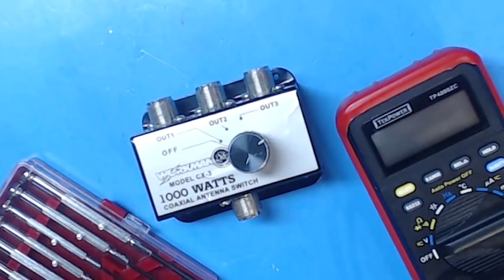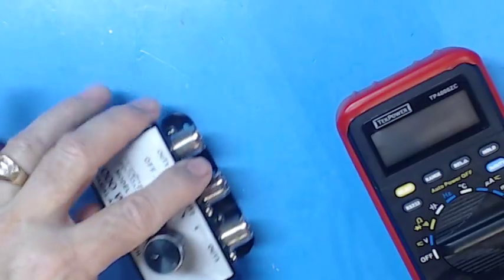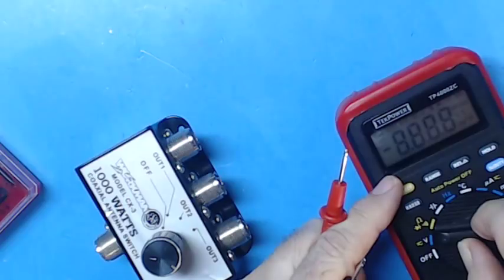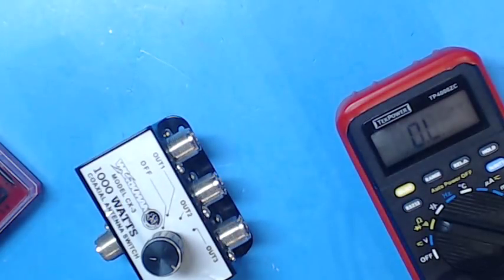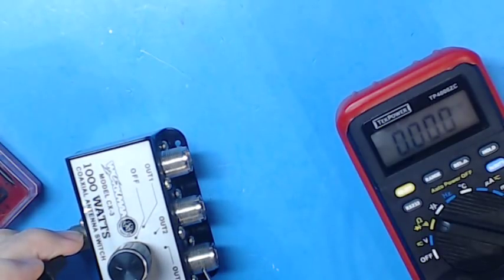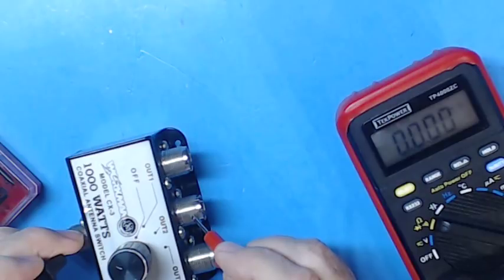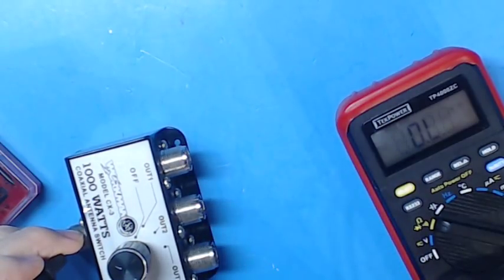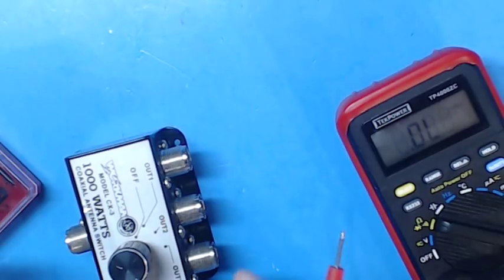So we're going to see if this is a good switch. Again, it's used. First thing we're going to do is check continuity. And we'll get this on the cut. There we go. First we'll see if all the grounds are good. That's zero, that's zero, that's zero, and to the chassis is zero. So continuity is good.